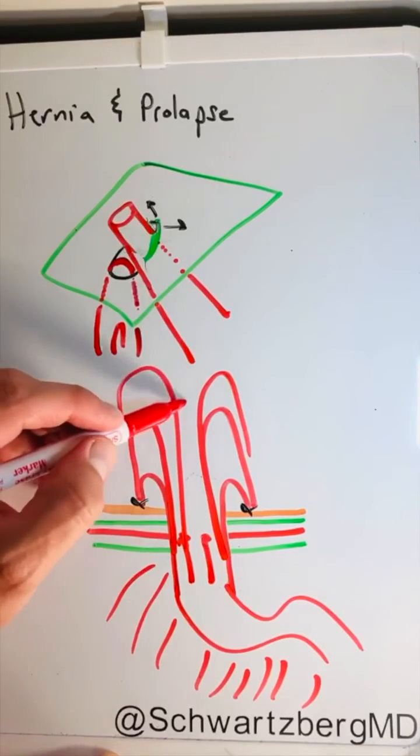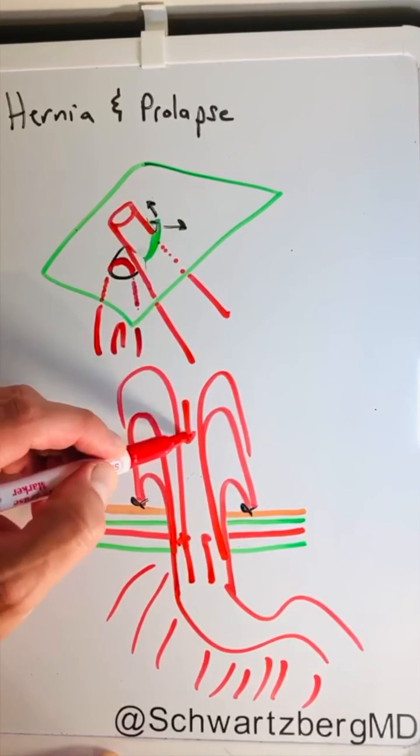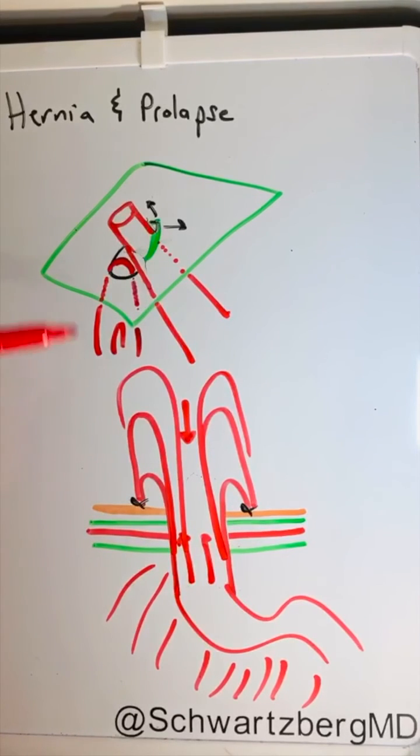The thing to do is reduce it back into the abdomen, but if it continues to happen, both of these things can be fixed sometimes surgically. It's something that if it is happening, you can bring up with your surgeon and talk about possible surgical corrections. Thank you.